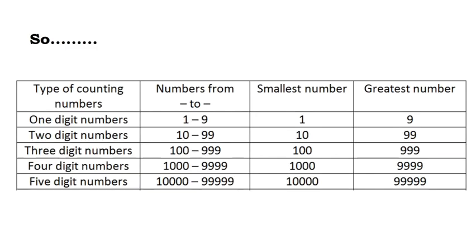So, for 1 digit numbers the smallest number is 1 and the greatest is 9. Similarly, for 2 digit numbers the smallest is 10 and the greatest is 99. For 3 digit numbers, 100 is the smallest and 999 is the greatest. For 4 digit numbers, 1000 is the smallest and 9999 is the greatest.